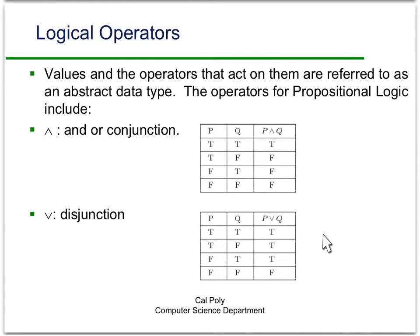The next operator you've also run into is disjunction or the OR operator, and that's shown in this truth table. This operator is true if either P or Q is true, and it's only false if both P and Q are false.